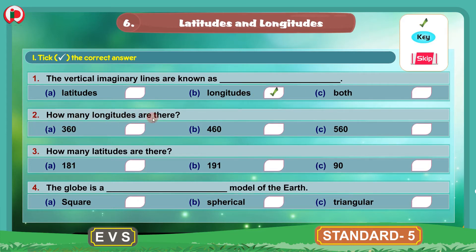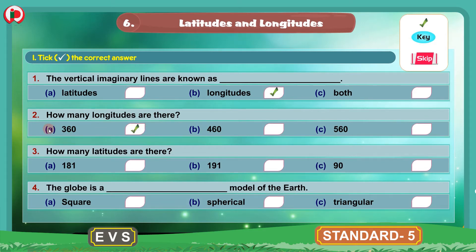Question 2: How many longitudes are there? The options are A. 360, B. 460, C. 560. The correct answer is option A, 360. We will put the tick mark here for 360, option A. How many longitudes are there? There are 360 longitudes.